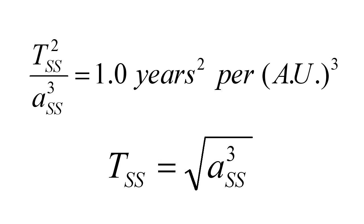According to Kepler, T squared over a cubed equals 1 years squared per AU cubed for everything in orbit around the Sun, and that includes our spaceship. As long as we use years and AU, we can solve for the orbital period of the spaceship. It equals the square root of a cubed for the spaceship.